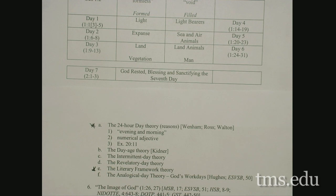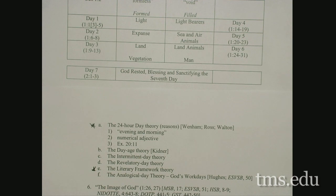The numerical adjective when used with yom throughout the Torah always refers to a singular day, a 24-hour period. We've already talked about Exodus 20:11 — Israel had six days of work and a seventh day of rest based upon God's work in making the heavens and the earth. So trying to change the meaning of yom within Genesis 1 has been tried over the years: the days equal a long period of time, or there is a long period of time between the days, or these days are Moses receiving the revelation.